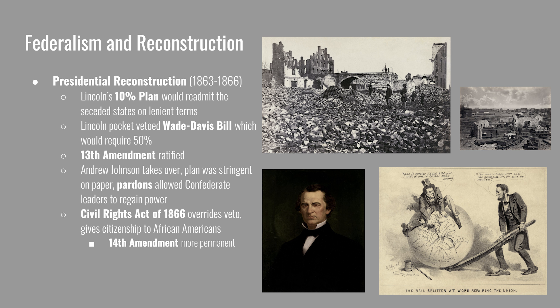After Reconstruction, southern state governments of Redeemer Democratic officials started passing black codes. These laws criminalized parts of daily African American life in order to force them into involuntary servitude. For example, vagrancy laws jailed men for not having a job. Once arrested and imprisoned, they would be hired out as cheap labor to pay off their fine.